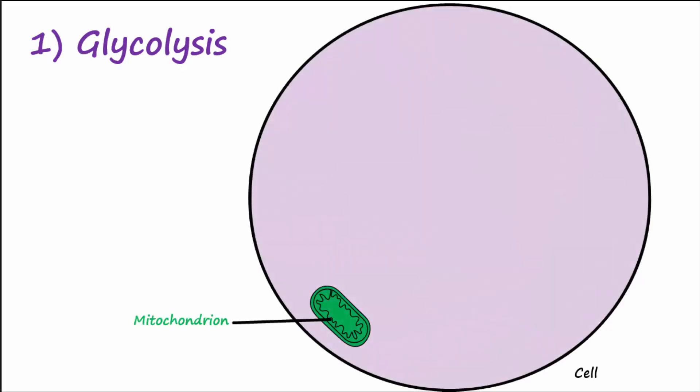The first step of cellular respiration is glycolysis. You have to know where in the cell this process occurs. It happens in the cytosol. It is also a process that does not use oxygen. Processes that do not use oxygen are called anaerobic. Glycolysis takes the six-carbon glucose molecule and splits it into two three-carbon molecules called pyruvate.